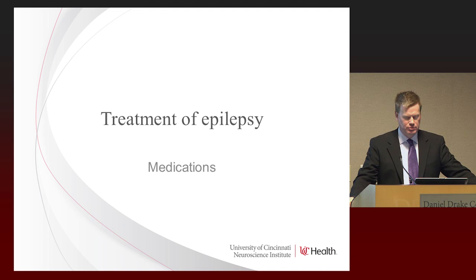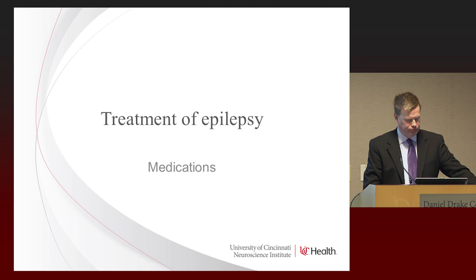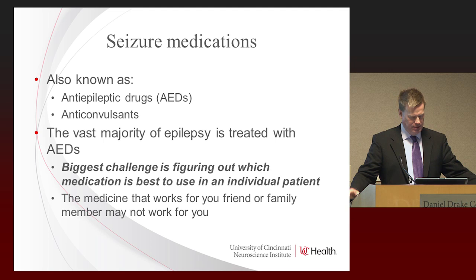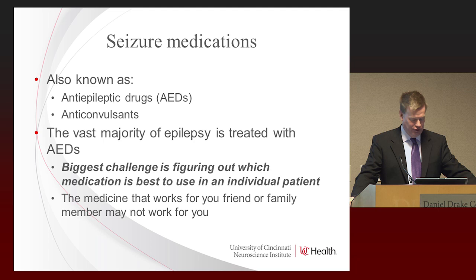Those are the tools we use to diagnose epilepsy. The most important tool is getting a history from the individual about what happens during the seizures. We're going to talk next about treatment of epilepsy, starting with medications. Seizure medications have many different terms — anti-epileptic drugs or AEDs, anti-convulsants, anti-seizure medicines — they're all the same thing. The vast majority of epilepsy we treat with medications. The biggest challenge is trying to figure out what medicine is best for that individual.